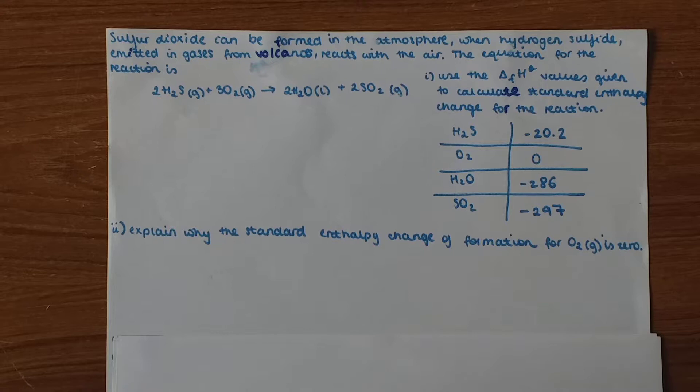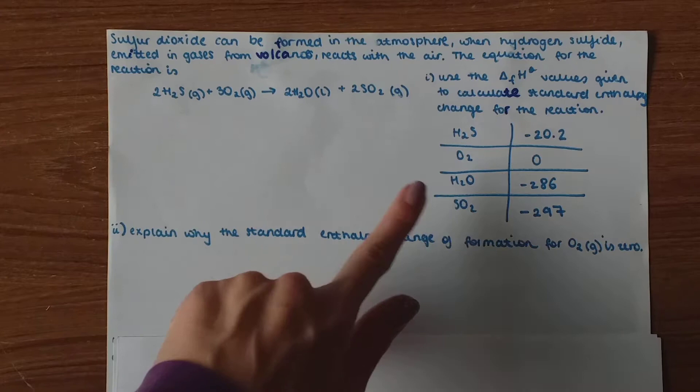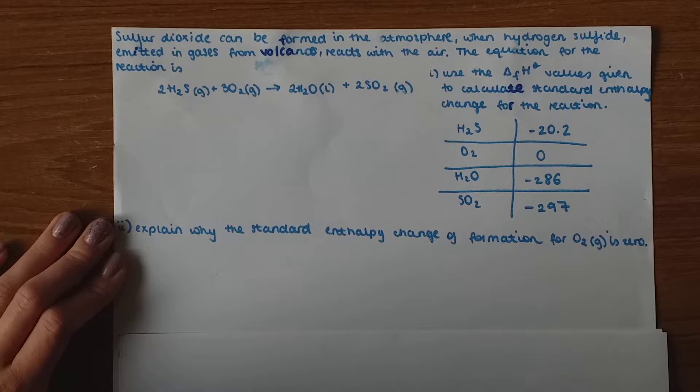So here is our first question. Sulfur dioxide can be formed in the atmosphere when hydrogen sulfate emitted in gases from volcanoes reacts with the air. The equation for the reaction is as follows and the first part asks us to use the enthalpy change of formation values given in the table to calculate standard enthalpy change for the reaction.